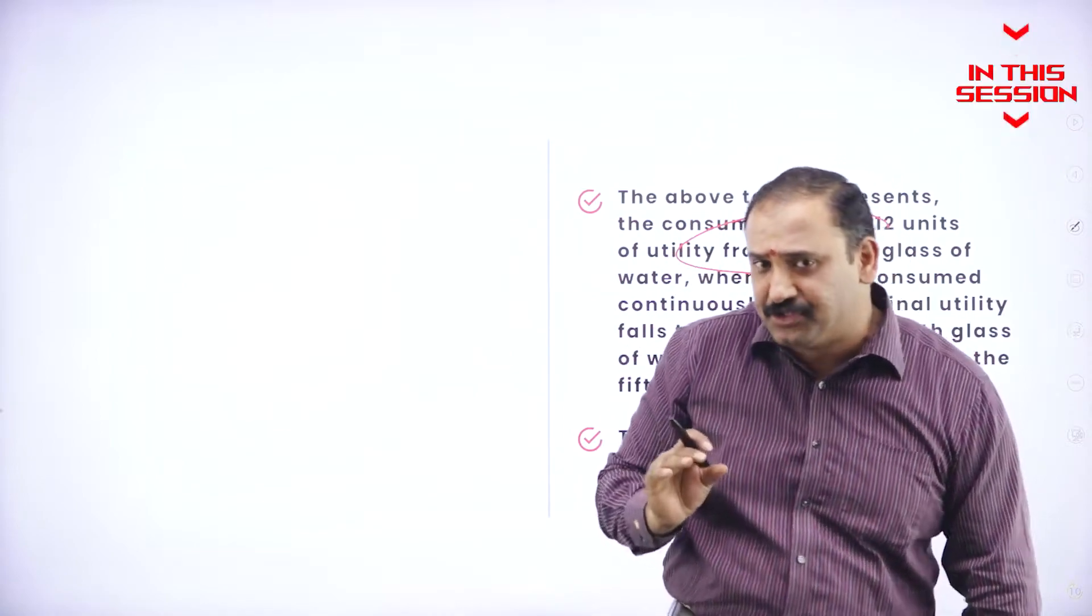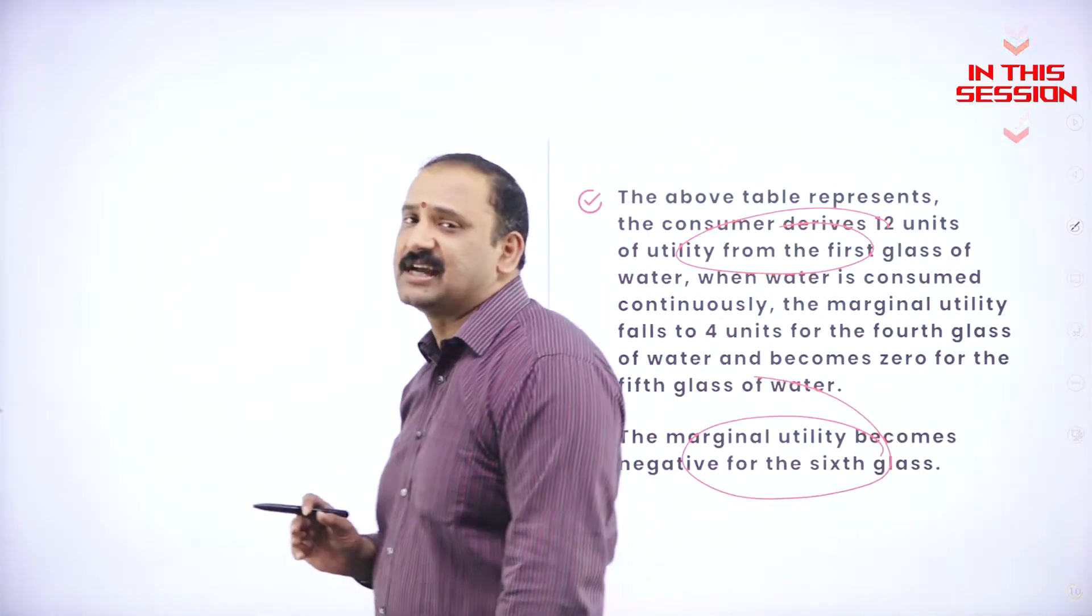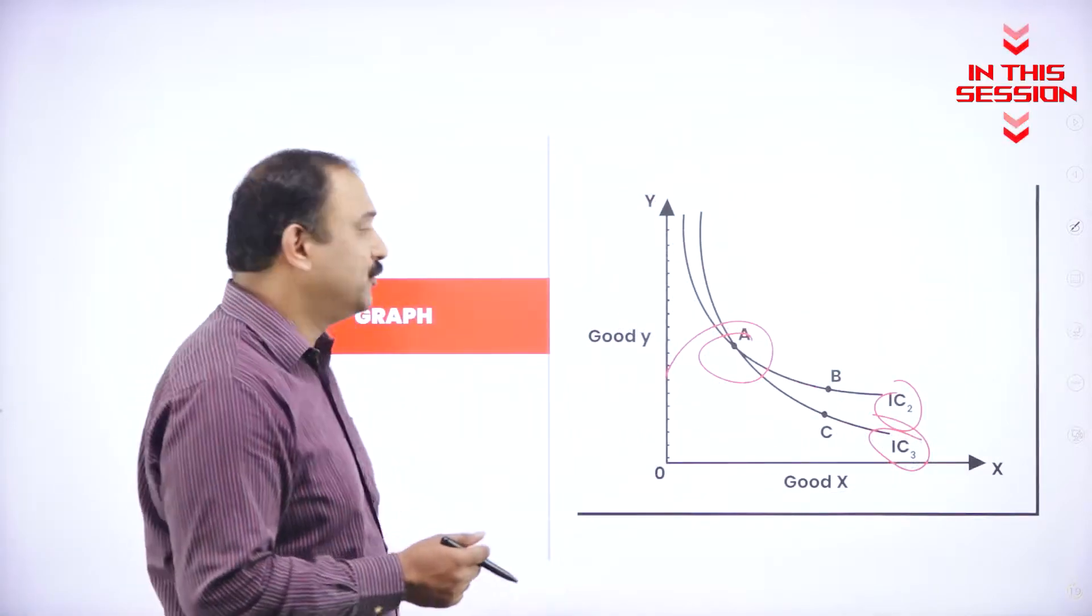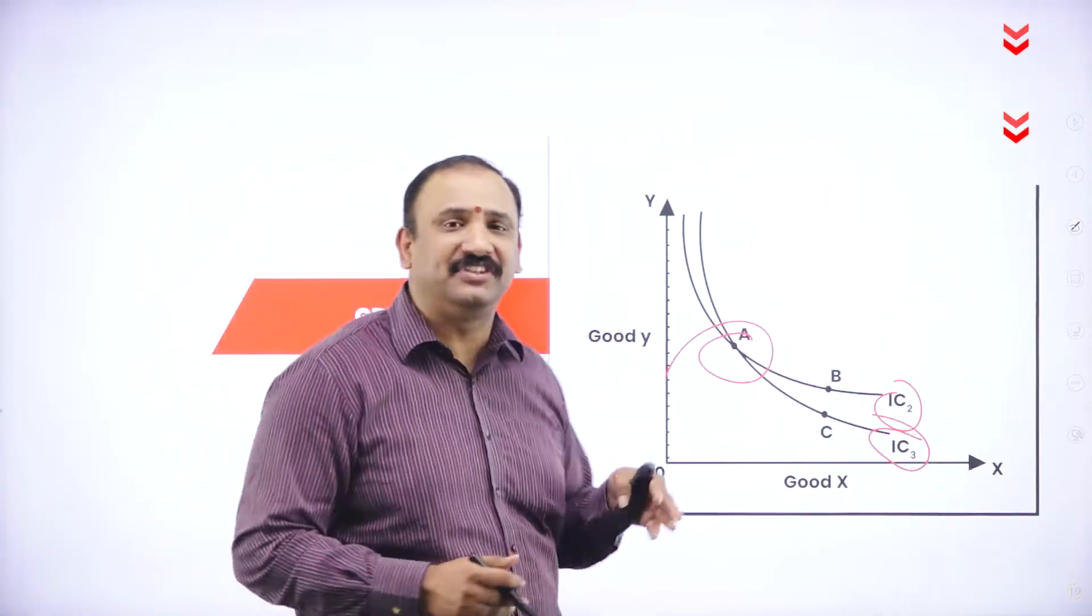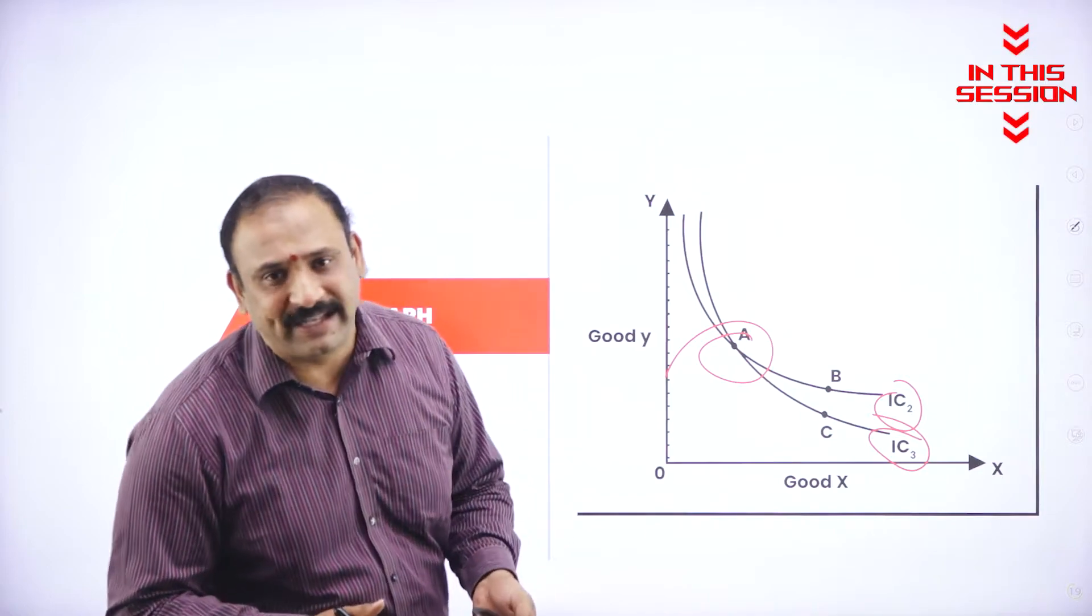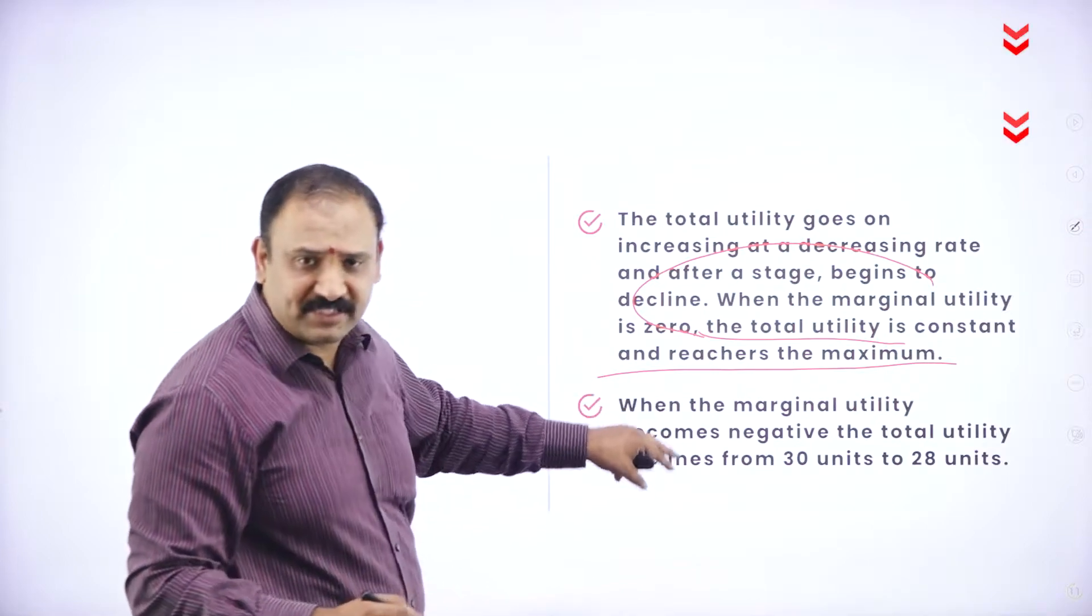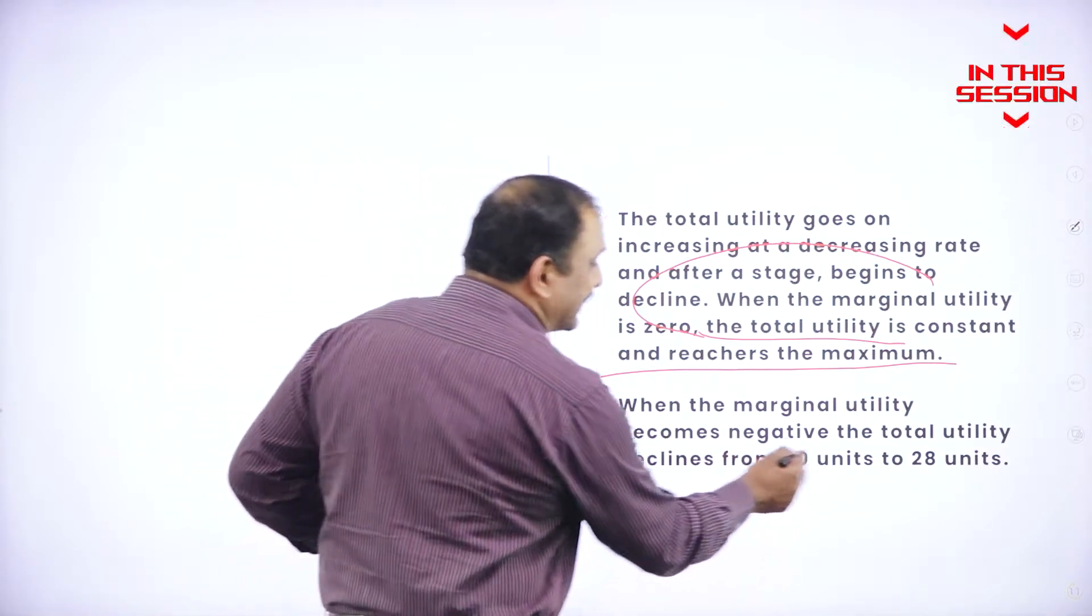More and more when you start consuming something, it starts coming down to a negative value. That is very important. Why? Because you will not be able to see an intersection happening at any of the junctures here. When the marginal utility becomes negative, the total utility declines.